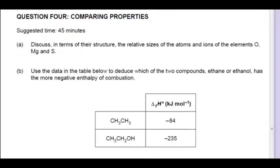Now in question 4a we're being asked to talk about the oxygen, magnesium and sulfur atoms as well as their ions and asked to relate it in terms of their structure, which obviously we're talking about the number of protons, the energy level they're in, electron shielding, things like that.